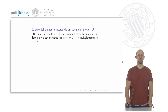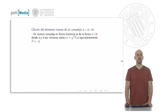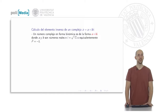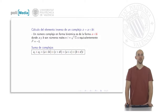Let's start by quickly reviewing what a complex number is. A complex number in binomial form is of the form a plus bi, where a and b are real numbers and the imaginary number i is simply the square root of minus 1. Note that this implies that i squared equals minus 1.